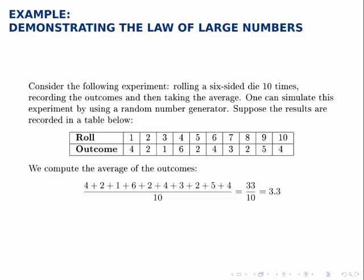For instance, for the first ten results, we might get something that looks like this table, where we get a four the first time, then a two, then a one, then a six, and so on and so forth. If we average together these results, we get 3.3.